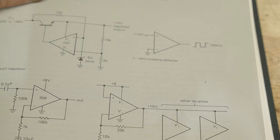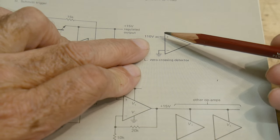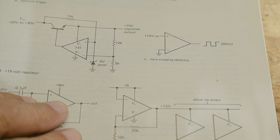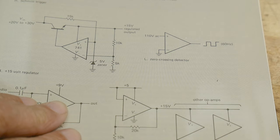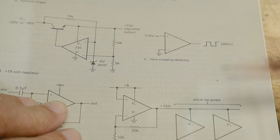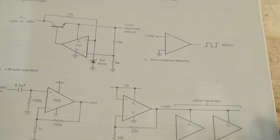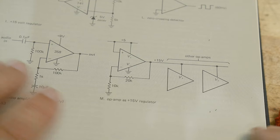And let's see here. Zero crossing, 110 volts AC. I don't think you're going to run 110 volts AC into this thing here. And I think 60 hertz. Aren't you going to get 120 hertz? Anyway. Anyhow, I don't like that one.